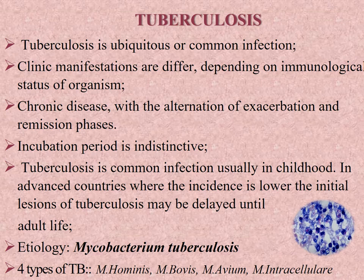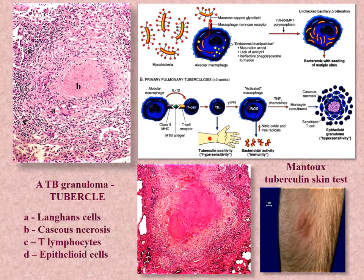This slide shows the period and stages of granuloma formation. Mycobacterium tuberculosis primarily infects macrophages. The sequence of granuloma development is as follows: in the first one to two days, infiltration by polymorphs occurs.